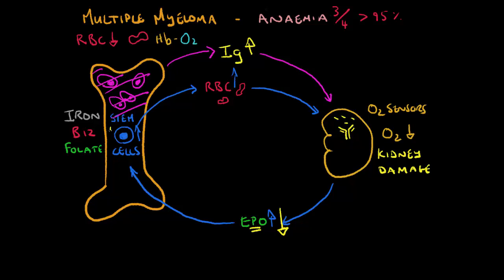Another thing that can happen is that these abnormal plasma cells can start to produce a number of other chemicals which can directly affect the marrow and the stem cells and the early precursor cells that are supposed to lead to red cell production, and stop them or inhibit them from working normally.